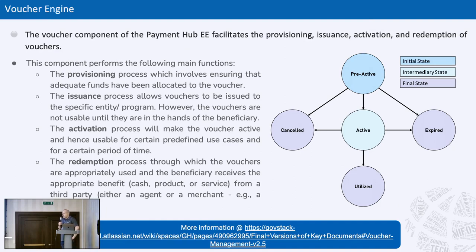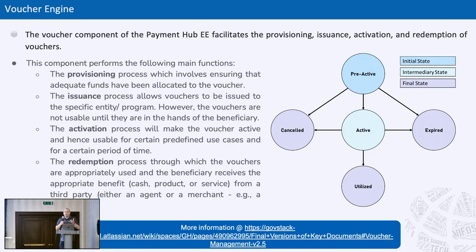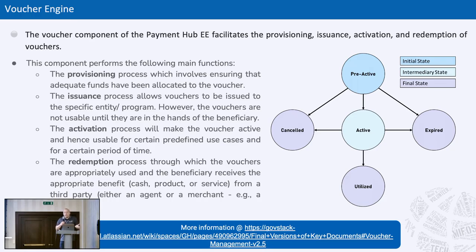The next area we developed was the voucher engine. For many use cases and country implementations GovStack has been looking at, there is a need for vouchers as a payment modality. The voucher engine is the process we've created to issue, redeem, activate, and cancel vouchers — effectively a full voucher lifecycle. What we're not doing is creating QR codes or printing physical vouchers ourselves. The voucher engine creates the information — serial numbers, voucher numbers, etc. — and exports that via API to whatever method you need to physically distribute those vouchers.